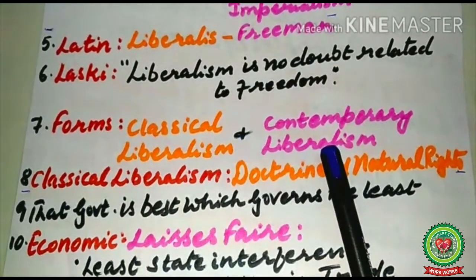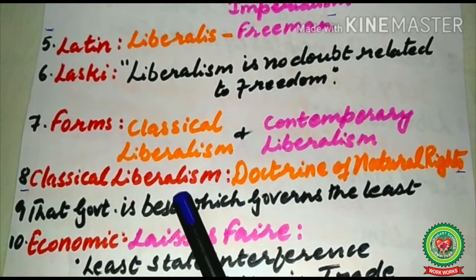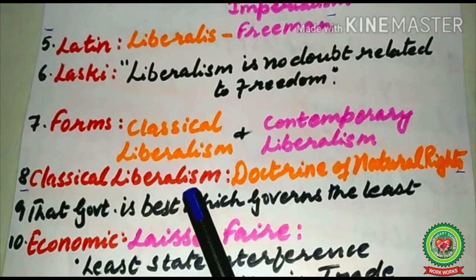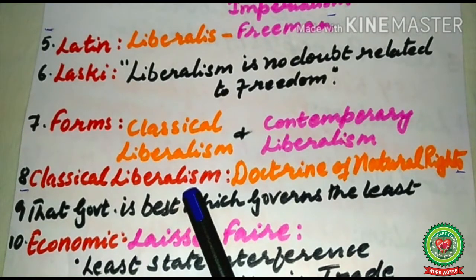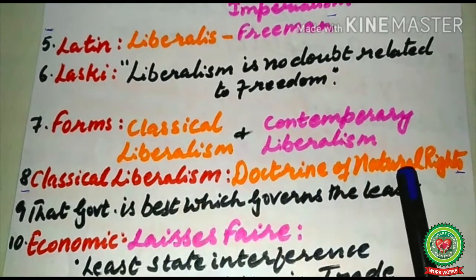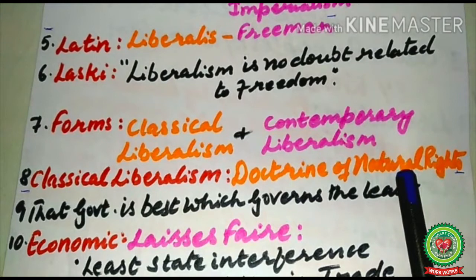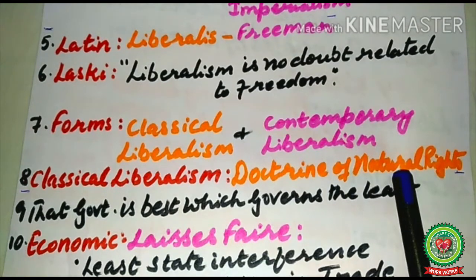Classical liberalism was the original form of liberalism — another name for it is individualism, as its earlier name was individualism. It supported a limited government based on the consent of the people. Classical liberalism supported the doctrine of natural rights of the individual and considered society as a mere collection of individuals. It desired minimum control of the state upon the individual.